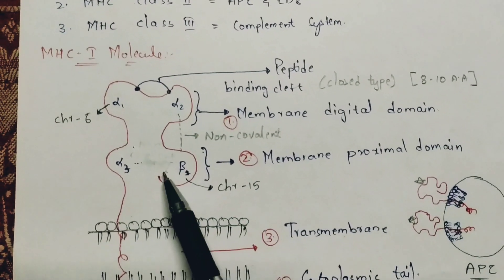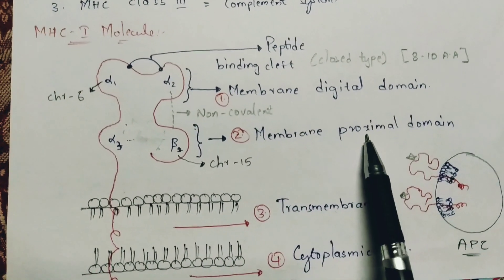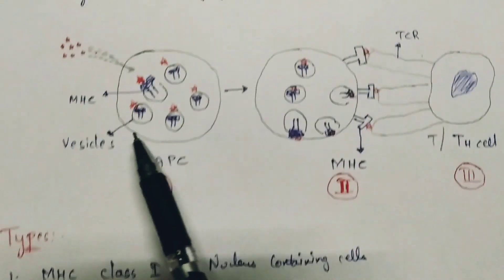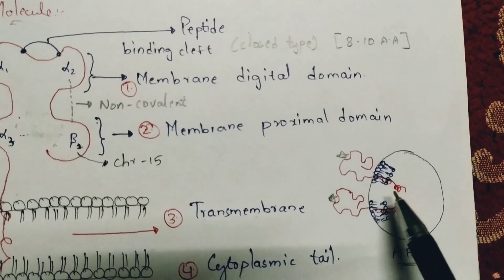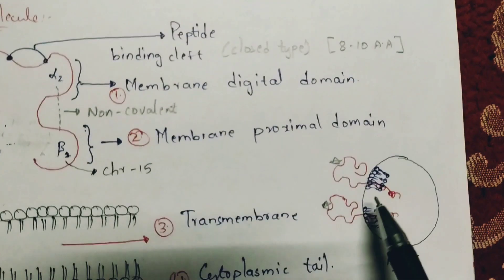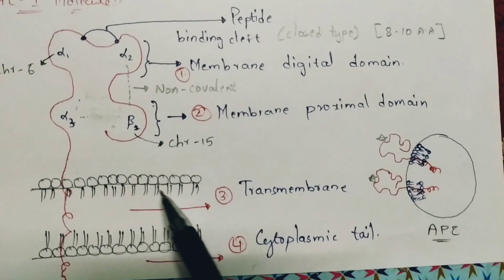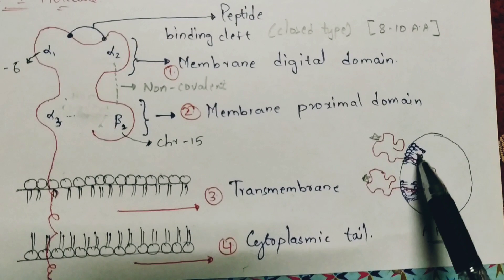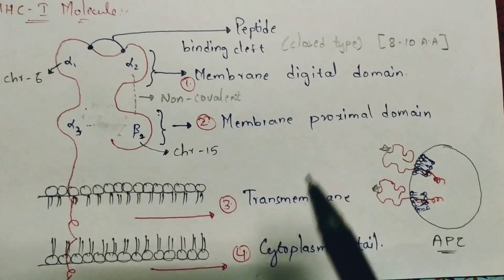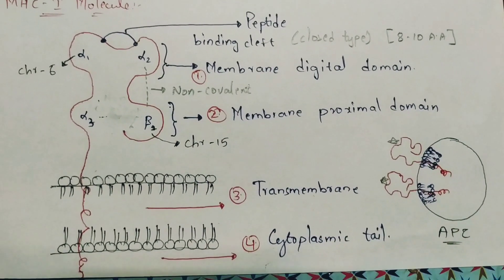MHC class 1 molecule consists of four regions: membrane distal domain, membrane proximal domain, transmembrane, and cytoplasmic tail. The MHC class 1 molecule protrudes out from the antigen presenting cell and is exposed outside, but remains attached to the cell membrane. It is arranged within the membrane layer.